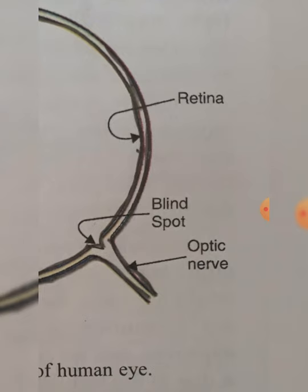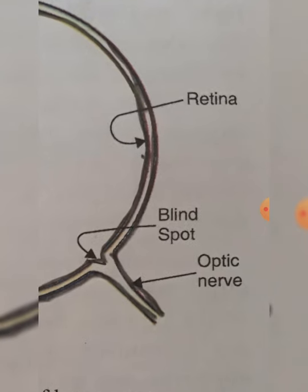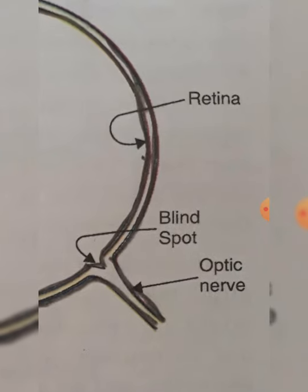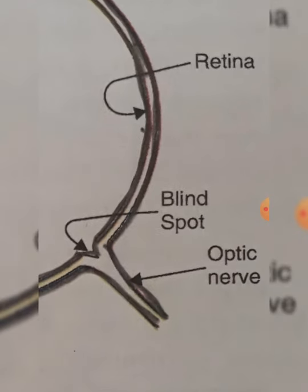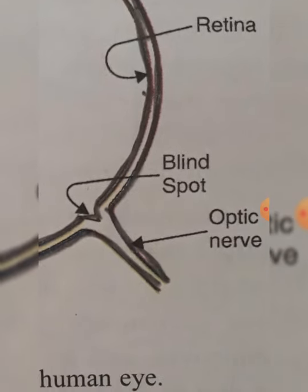The retina has a large number of light-sensitive cells — rods and cones — that respond to the intensity of light and the color of objects. When the image falls on the retina, these light-sensitive cells get activated and generate electrical signals. The retina sends those electrical signals to the brain through the optic nerve, giving rise to the sensation of vision.